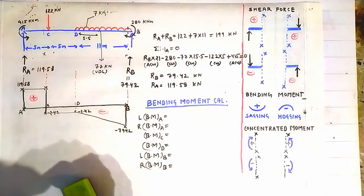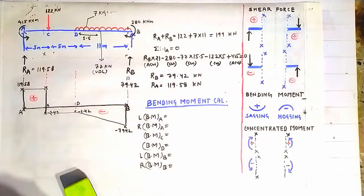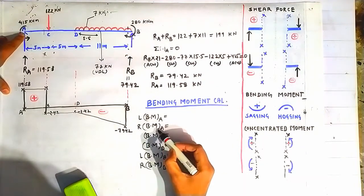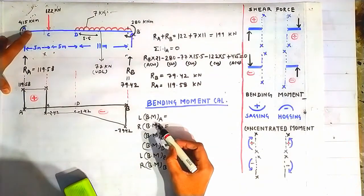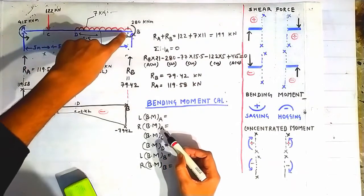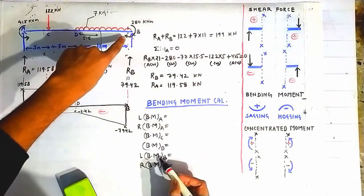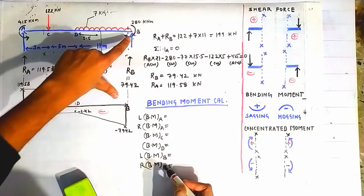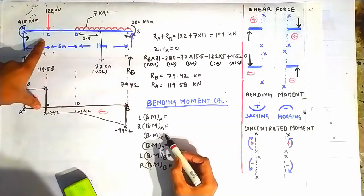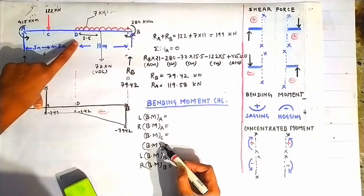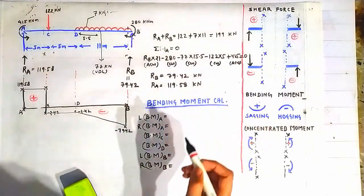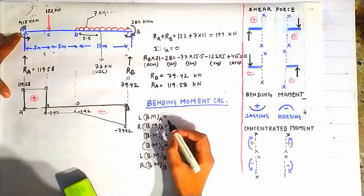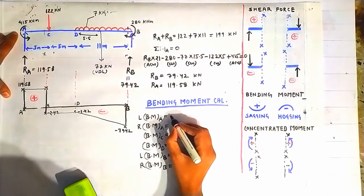Now we calculate bending moments. We find bending moment on both sides of point A and point B because there are concentrated moments acting at those points, causing sudden changes. Bending moments at C and D are found directly by constructing a section at those points since no concentrated moment acts there. Bending moment on the left side of point A is zero because the beam terminates there.